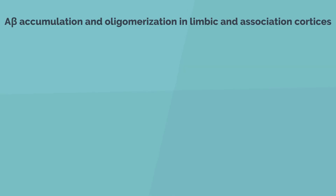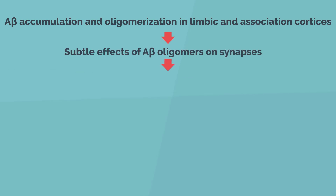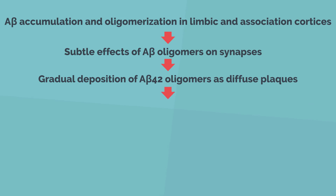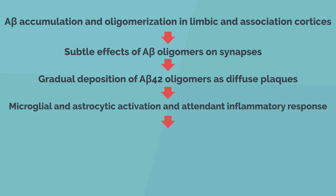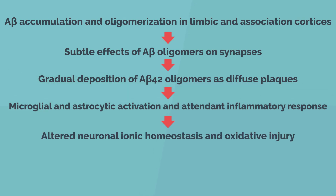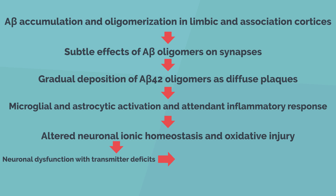Amyloid beta oligomers exert subtle effects on synapses, then gradually deposit as diffuse plaques. Microglial and astrocytic activation and attendant inflammatory response occur, followed by altered neuronal ionic homeostasis and oxidative injury. These changes cause neuronal dysfunction with transmitter deficits, while altered kinase and phosphatase activity induces deposition of neurofibrillary tangles.